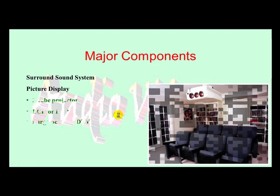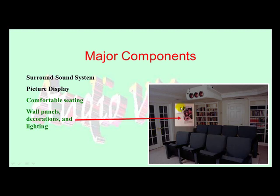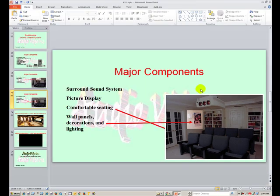We click through the other bullet points and go to the next slide. We highlight the comfortable seating with an arrow, and then the wall panels with decorations and special lighting are highlighted as well. So we took the basic initial image, made a copy, darkened it, then made several copies of the darkened image and cut out the seating, the back wall, and the projector from the regular image, pasting them onto the darkened images and lining them up so nothing looked out of place.